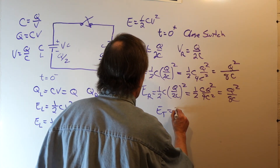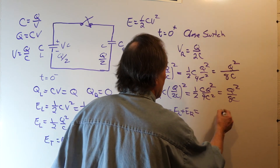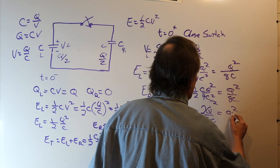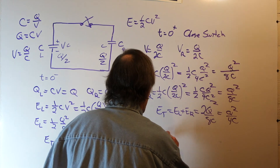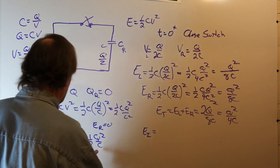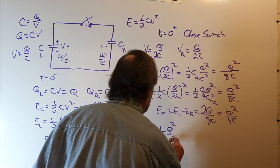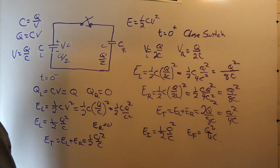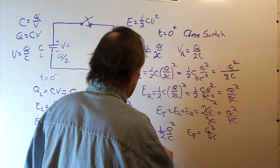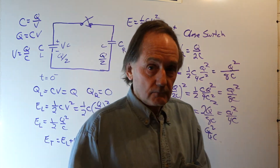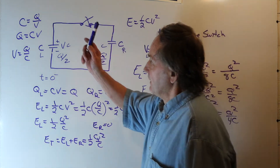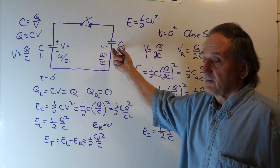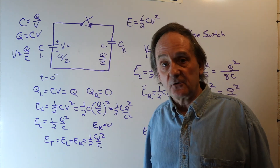The total final energy is the energy on the left plus the energy on the right — both capacitors have the same energy, so it's twice Q squared over 8C, which is Q squared over 4C. The initial energy was one-half Q squared over C, and the final energy after the switch was closed is Q squared over 4C — exactly half the initial energy. So the question is: what happened to half the energy? There are no losses in the system.